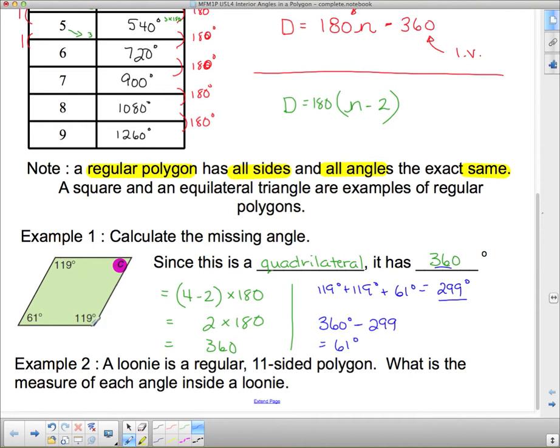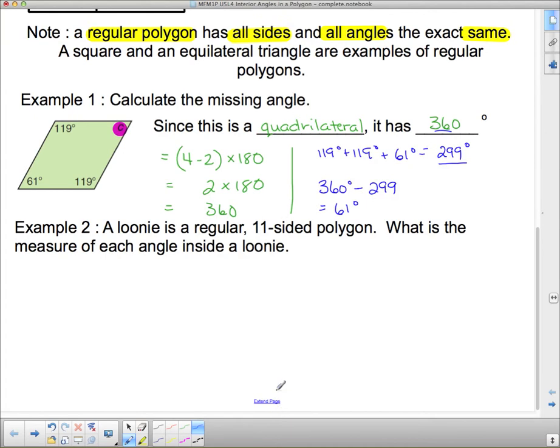Now, since these two sides here are the same and these two sides here are the same, this thing has another name. It's called a parallelogram. But we're not going to get into that too much. The next one says, a loonie is a regular 11-sided polygon. What is the measure of each angle inside the loonie?